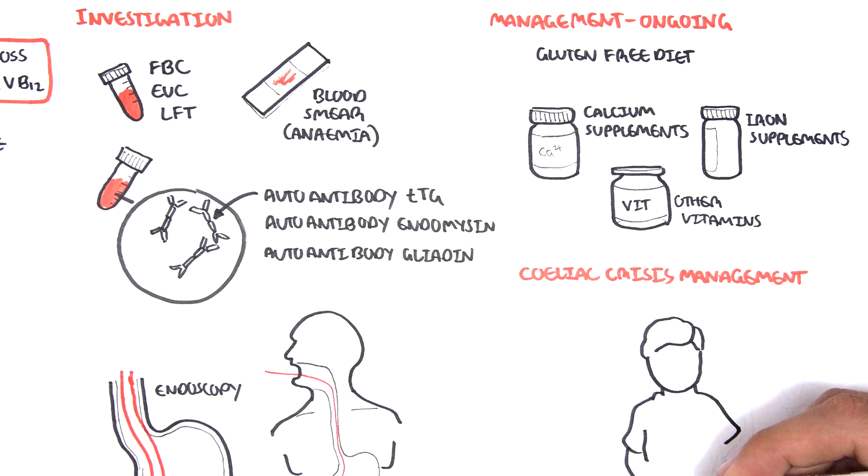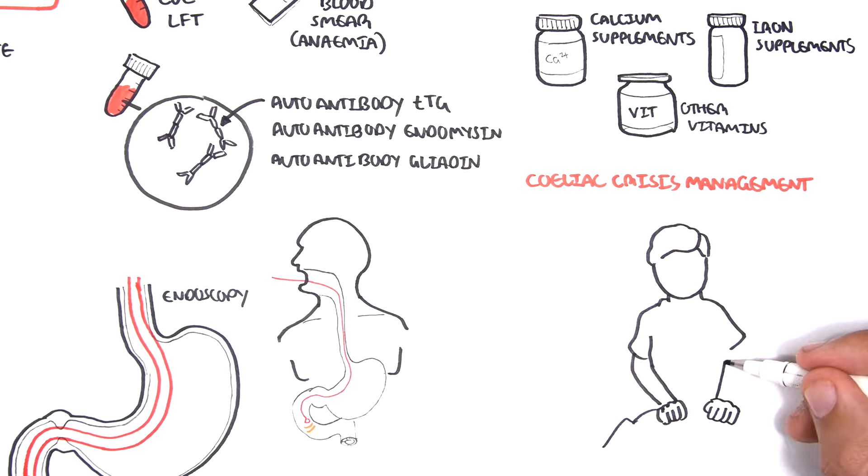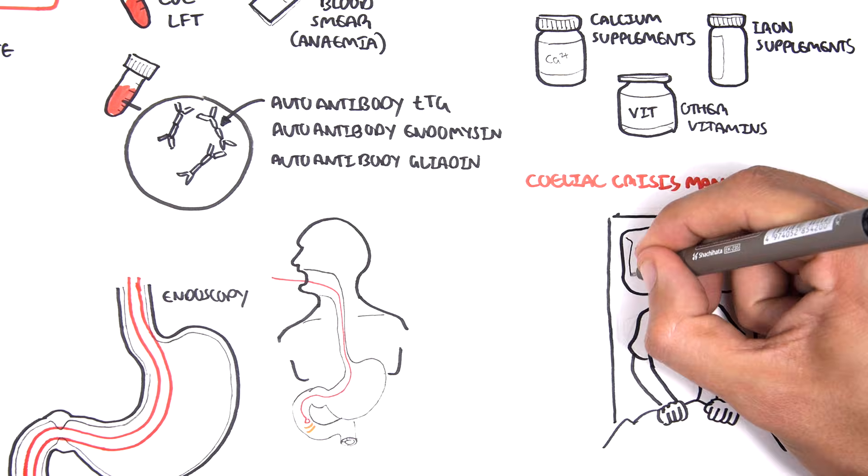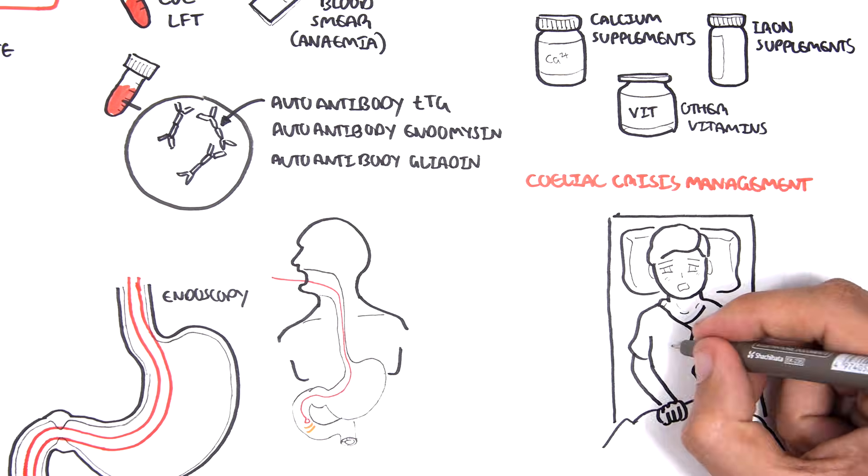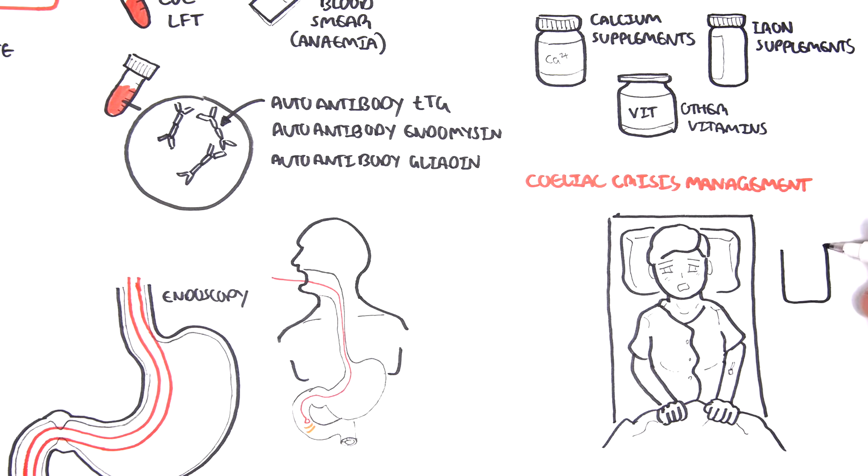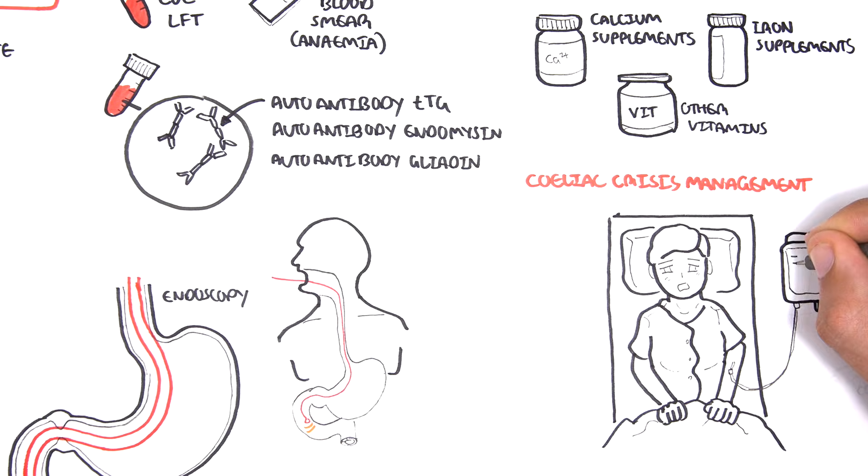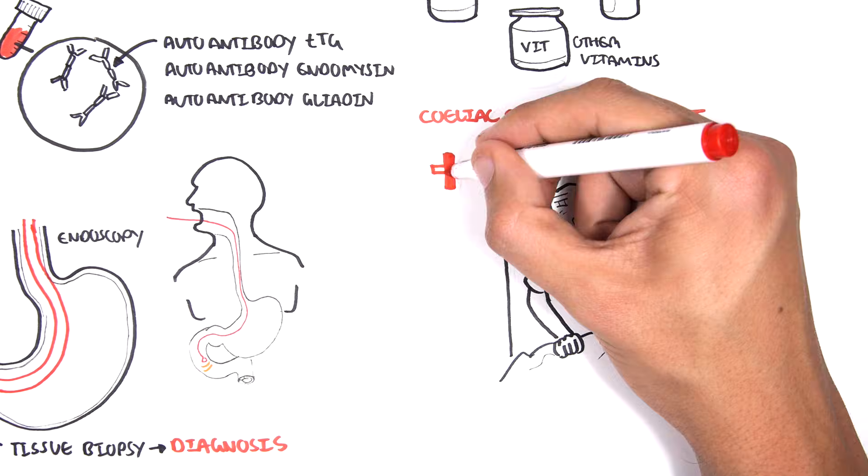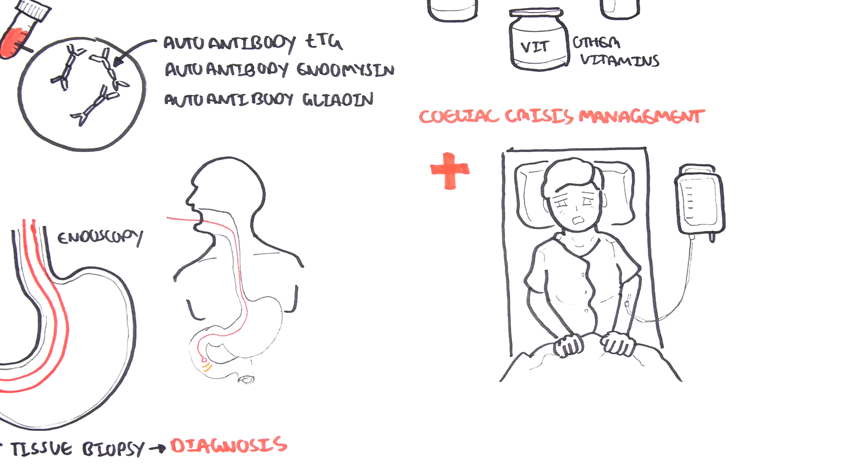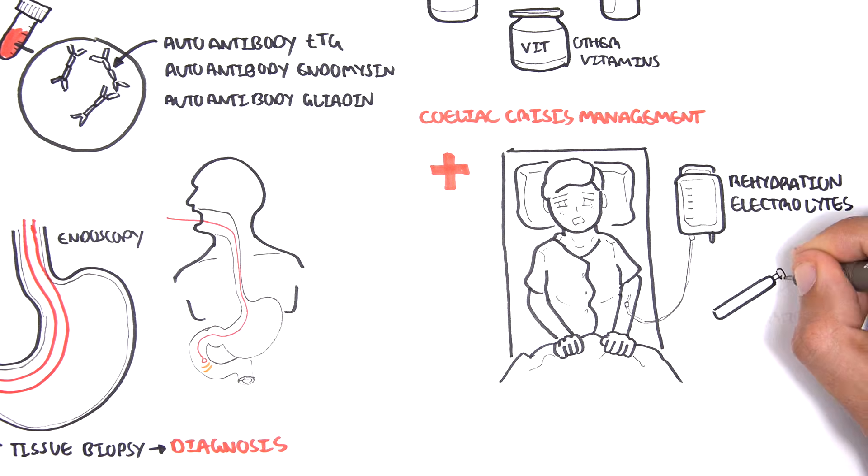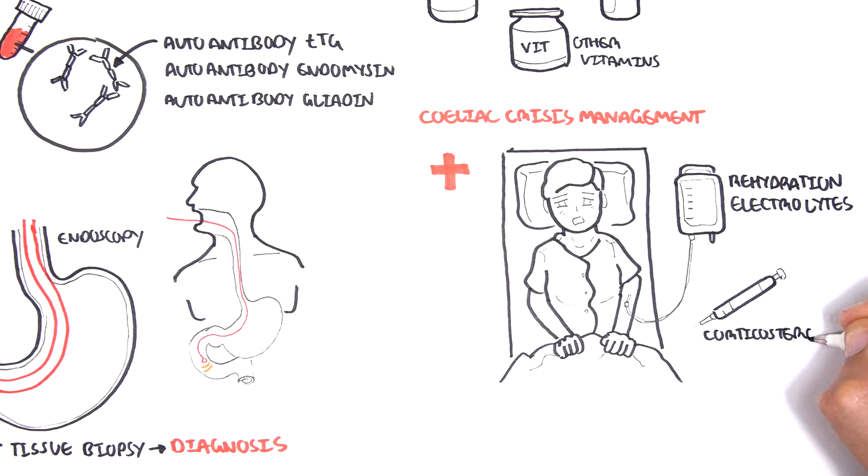...also known as celiac crisis, quick treatment is important. Celiac crisis is a life-threatening condition and it is rare. People who present usually have unexplained diarrhea with severe malabsorption and massive electrolyte imbalance. Treatment includes rehydration with electrolytes and also corticosteroids to reduce the inflammation and pain.